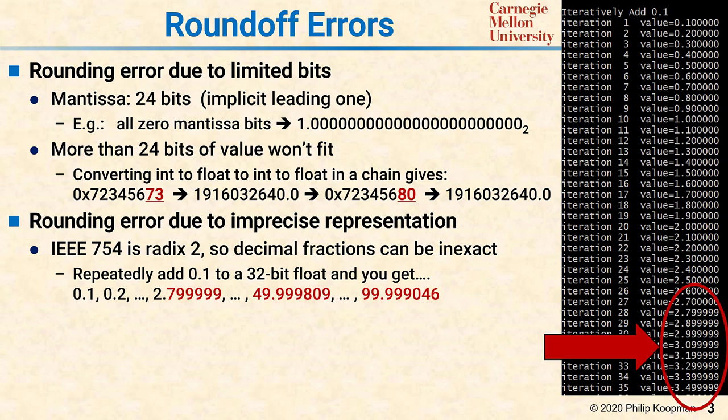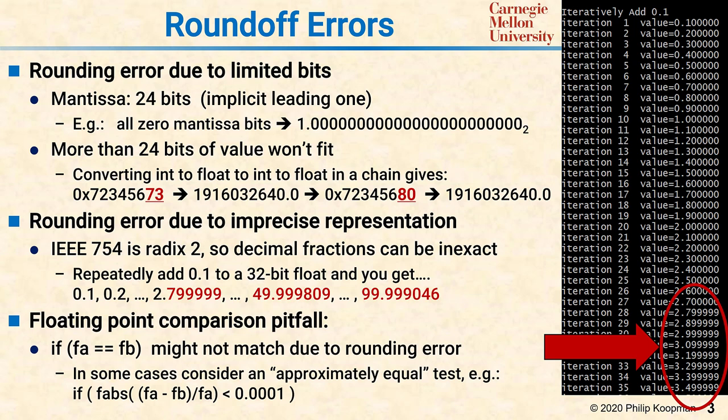This leads to a fundamental floating-point comparison pitfall. If you take two floating-point numbers that have been created by different computations and test them for equality, they might not match. Even if it's the same computation, if the operations were done in different orders, the round-off might have occurred differently.